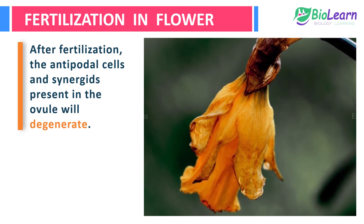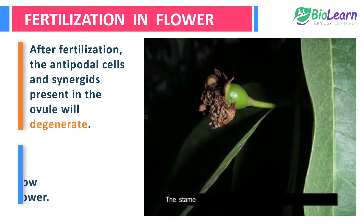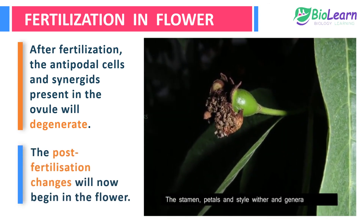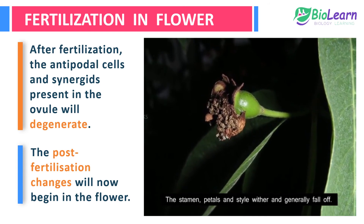After double fertilization, the antipodal cells and synergids present in the ovule will degenerate. Once this complete fertilization process is successful, the post-fertilization changes will begin in the flower.